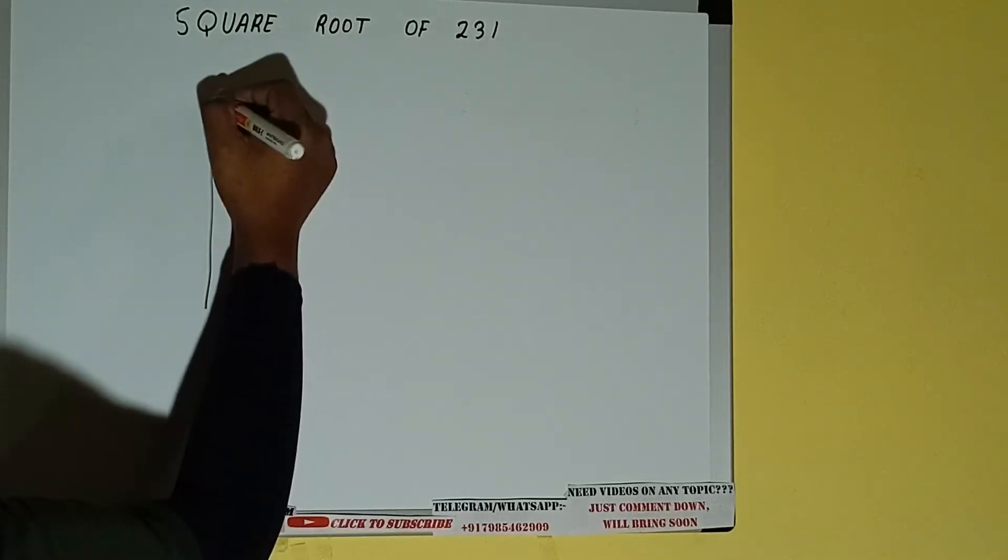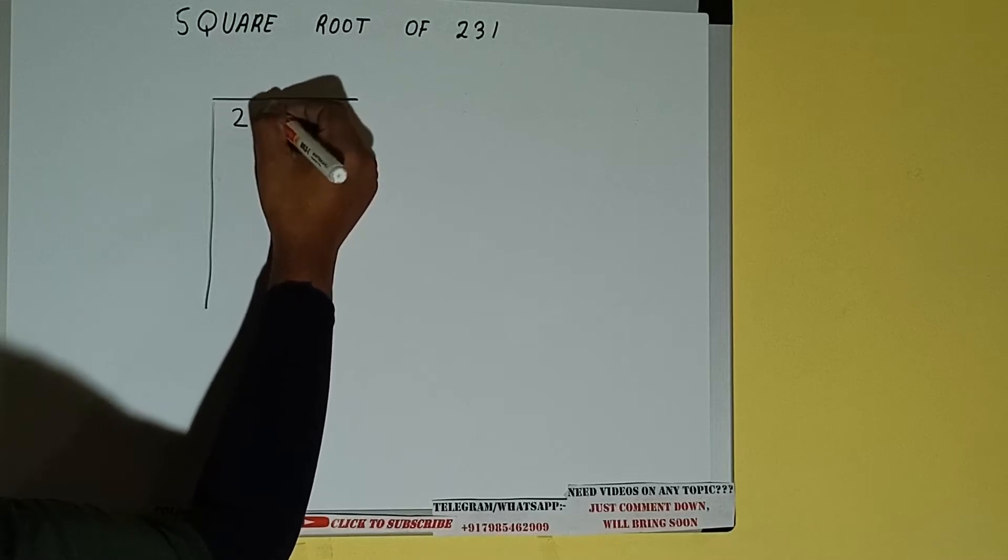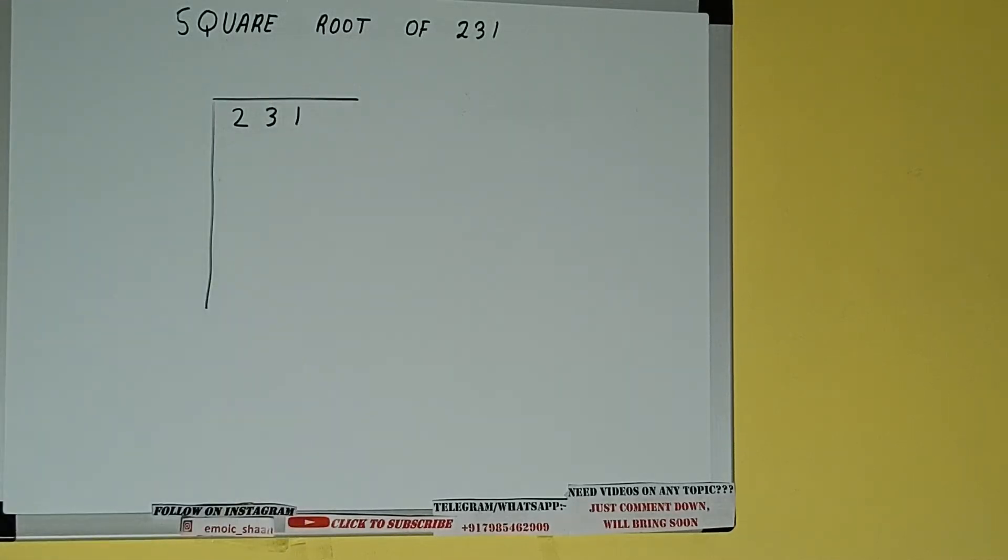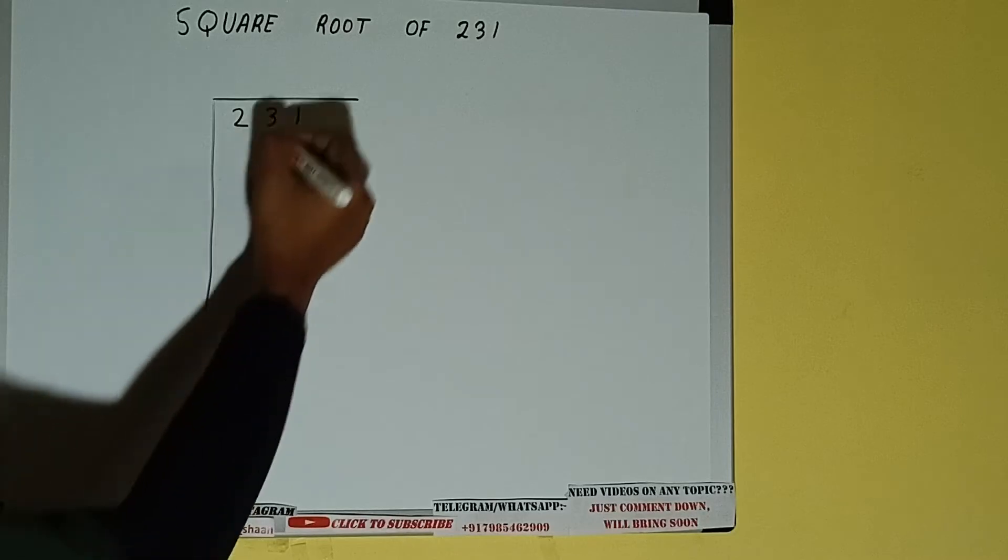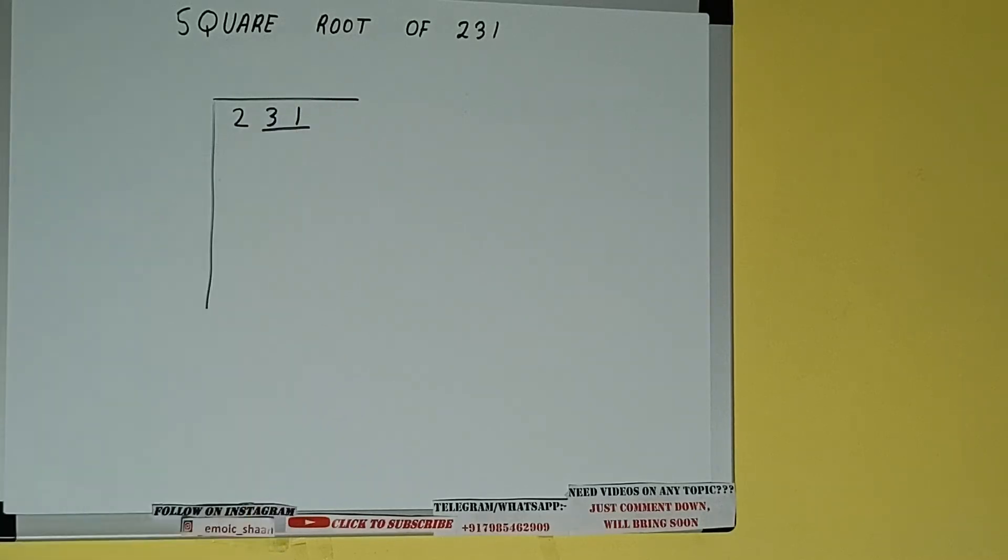First of all, we need to write the number like this. The next thing we need to do is form pairs from the right hand side. So one pair will be this, and these two will be left out.